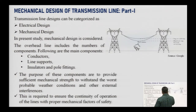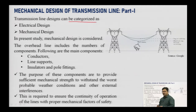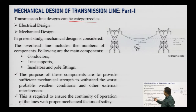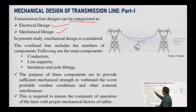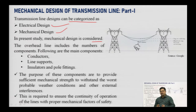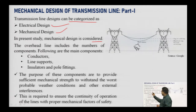The first thing is the mechanical design of a transmission line. Transmission line design can be categorized into two parts: electrical design and mechanical design. In the present study, the mechanical design is considered. The overhead line includes a number of components.